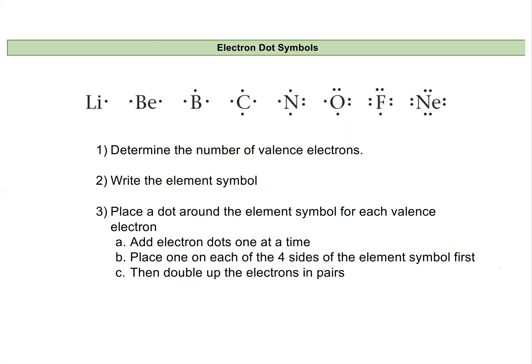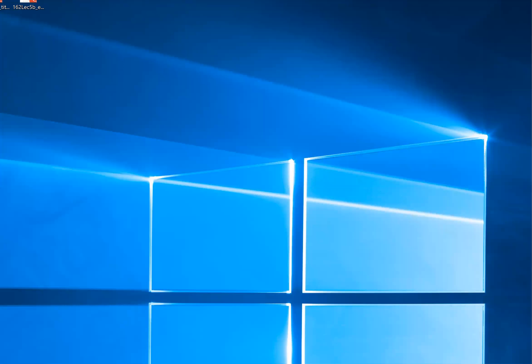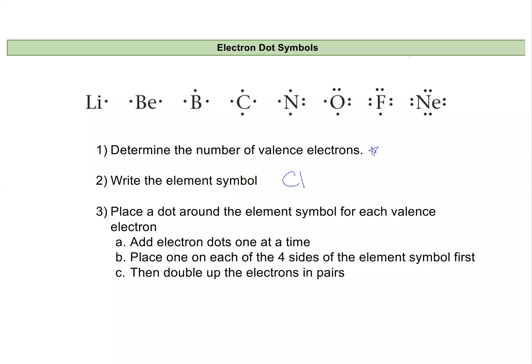So to draw an electron dot symbol, first you need to determine the number of valence electrons that it has from the periodic table, and then you'll write the element symbol down. So if we were doing something like chlorine, I would write my element symbol. Now chlorine is in the same group as fluorine, so it will have seven valence electrons.